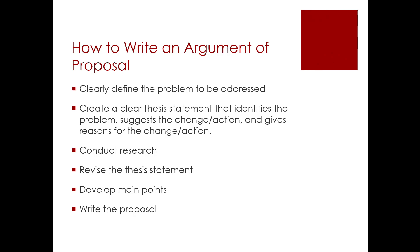How do you write an argument of proposal? You clearly define the problem to be addressed, create a clear thesis statement that identifies the problem, suggests the change or action, and gives the reasons for that change. We conduct research, then revise our thesis if need be, and develop our main points. If you get the thesis statement right, it's almost that easy. The thesis statement with your clear assertion and main points is half the battle — I called it the spine of your essay. Get it right and you're on the road to an A-plus paper.